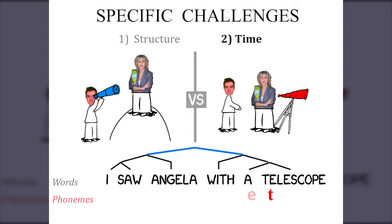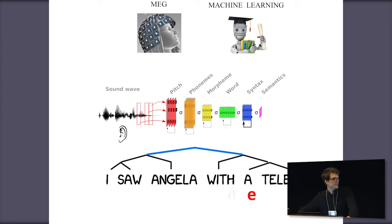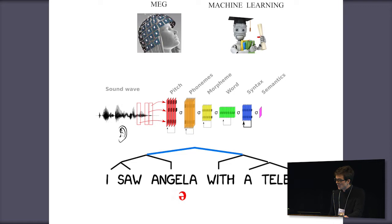The other big challenge is that language is intrinsically linked to time. Unlike images, we cannot present a sentence all at once — we have to unfold it over time. When I speak, I'm bombarding you with a very fast series of phonemes that your brain has to decode, integrate, and build words out of. To address these two big challenges, I'll argue for temporally resolved neuroimaging techniques, specifically magnetoencephalography (MEG), and show how simple machine learning techniques can help decode MEG activity.